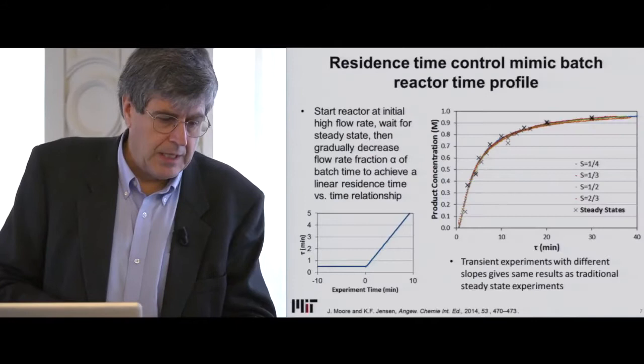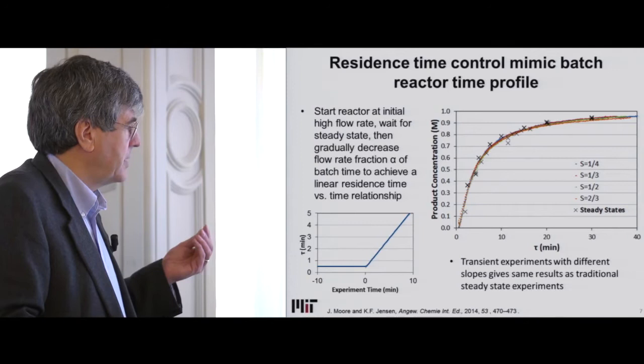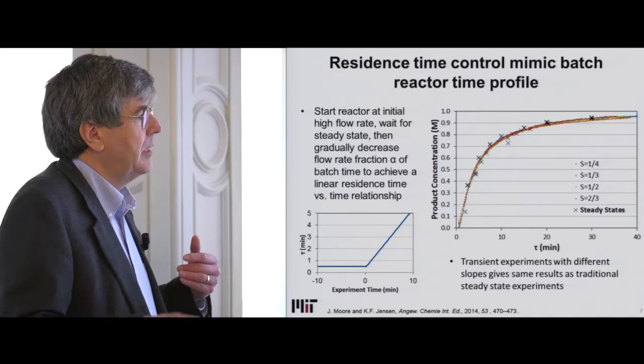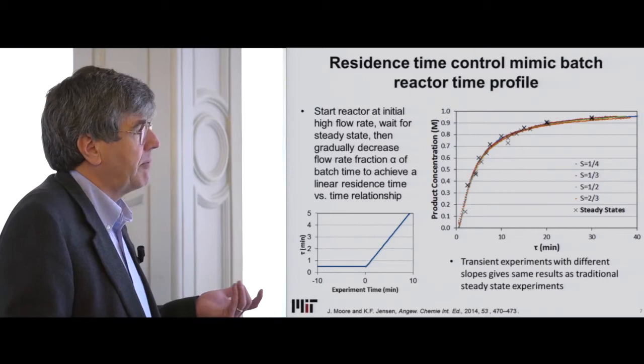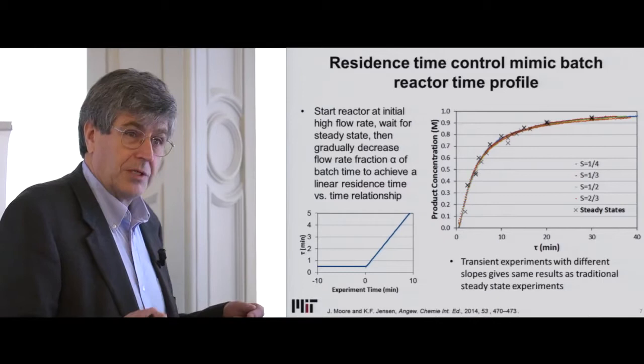Indeed that's what happens. Here's the residence time — as I increase the flow rate from a high value to a low value, my residence time increases and I go up the ramp, tracing out the reaction curve plotted against residence time in the flow reactor, which is exactly the same as time in the batch reactor. I can get a time course by doing this with different ramps and they overlap. The steady-state experiments correspond too, but it's much easier to change the flow rate while already running than having to do separate experiments.